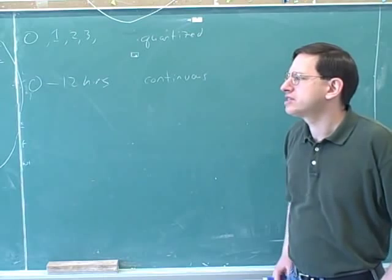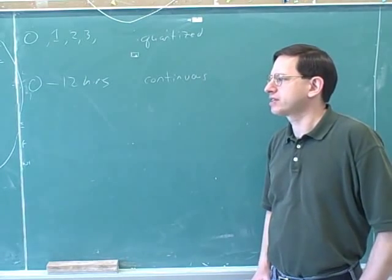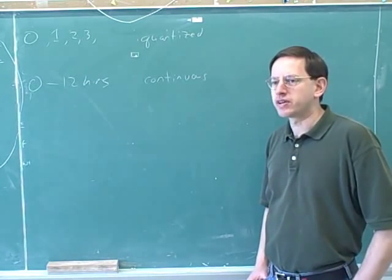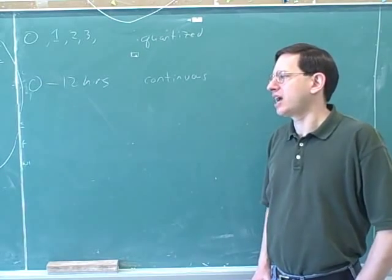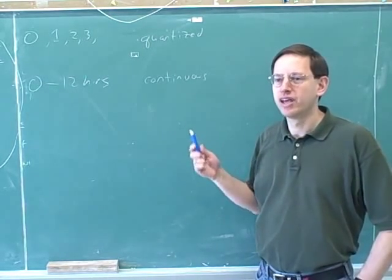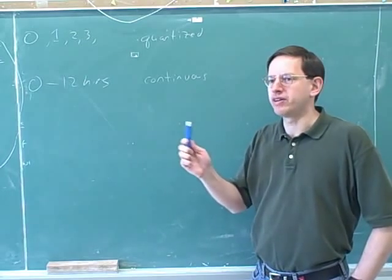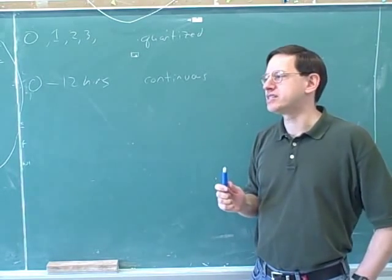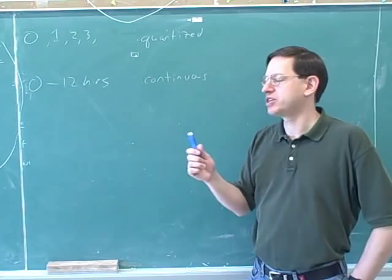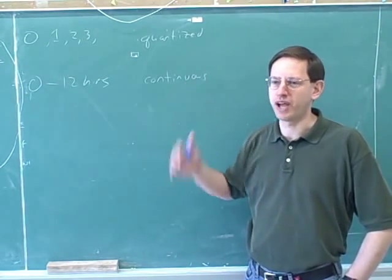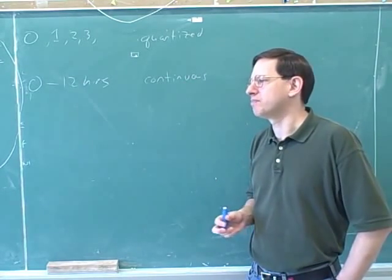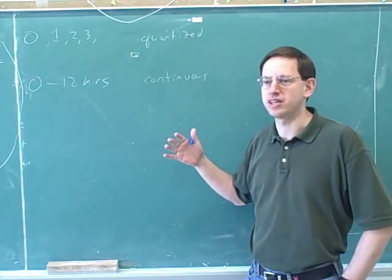It would generally seem that many things in classical physics seem to be continuous. For example, you might ask, how much energy does the chalk holder have? Well, I could give it a small amount of energy or a big amount of energy. And it seems like I can vary how fast I'm shaking my hand in any particular way so that the energy seems like it could be continuous.